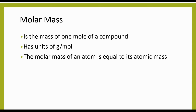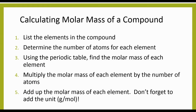This leads us to molar mass. Molar mass is the mass of one mole of a compound in grams, and it has units of grams per mole. The molar mass of a single atom is equal to its atomic mass, which we can find on the periodic table. To calculate molar mass: list the elements present, determine the number of atoms for each element using subscripts and parentheses, find the molar mass of each element from the periodic table, multiply each element's molar mass by its number of atoms, then add everything up. Don't forget your units of grams per mole.